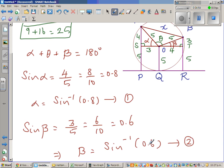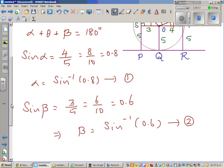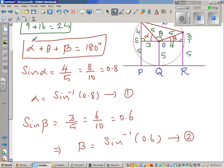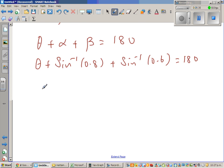You can also say arc sine. So can we say that alpha plus theta plus beta is 180? Can I write now the same as theta plus alpha plus beta is 180 degrees? So I can say theta plus alpha is sine inverse of 0.8 plus beta is sine inverse of 0.6 is equal to 180. So if you make theta the subject, theta is 180 minus sine inverse of 0.8 minus sine inverse of 0.6.